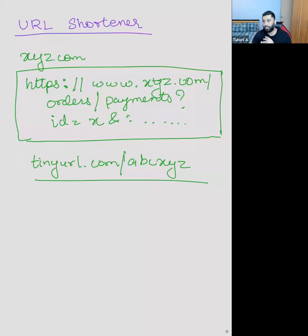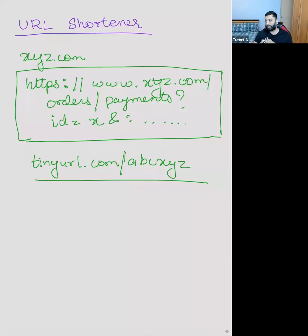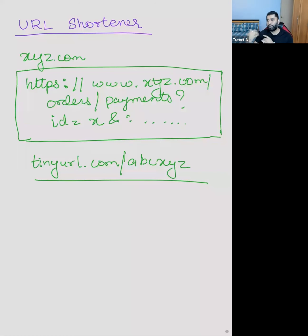If you know about this, you can use it to your advantage. For example, suppose you're exposing a video or article - you share your blog link. If you get to know how many people clicked on it and from where, you know the geographical region. You probably don't need the exact lat/long, but regional information helps you understand where your audience is. If more people are clicking from the US, you probably want to optimize your next content to focus on that region.